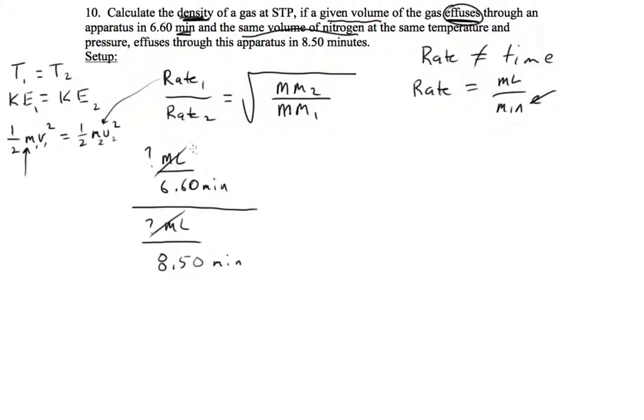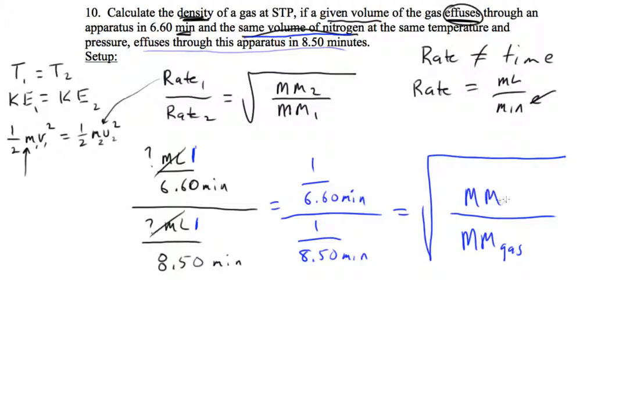And that's what makes this problem a little easier, is now we can just put a 1 there. So the ratio of the rates is going to be 1 over 6.60 minutes divided by 1 over 8.50 minutes. And that's going to equal the square root, and we're going to put the molar masses here, but now we need to remember who goes on the bottom. 6.60 goes with our unknown gas, so that's going to be the molar mass of our unknown gas. And 8.50, it says same volume of nitrogen effuses in 8.50 minutes, so this is going to be the molar mass of N2, because they are reversed from each other.